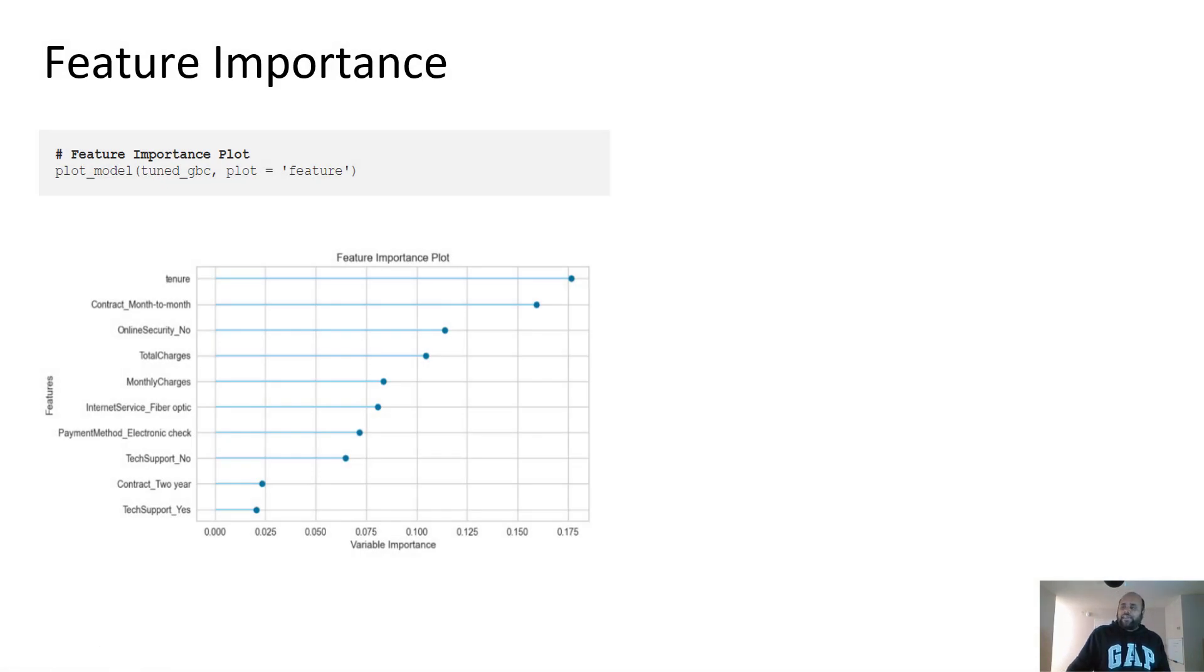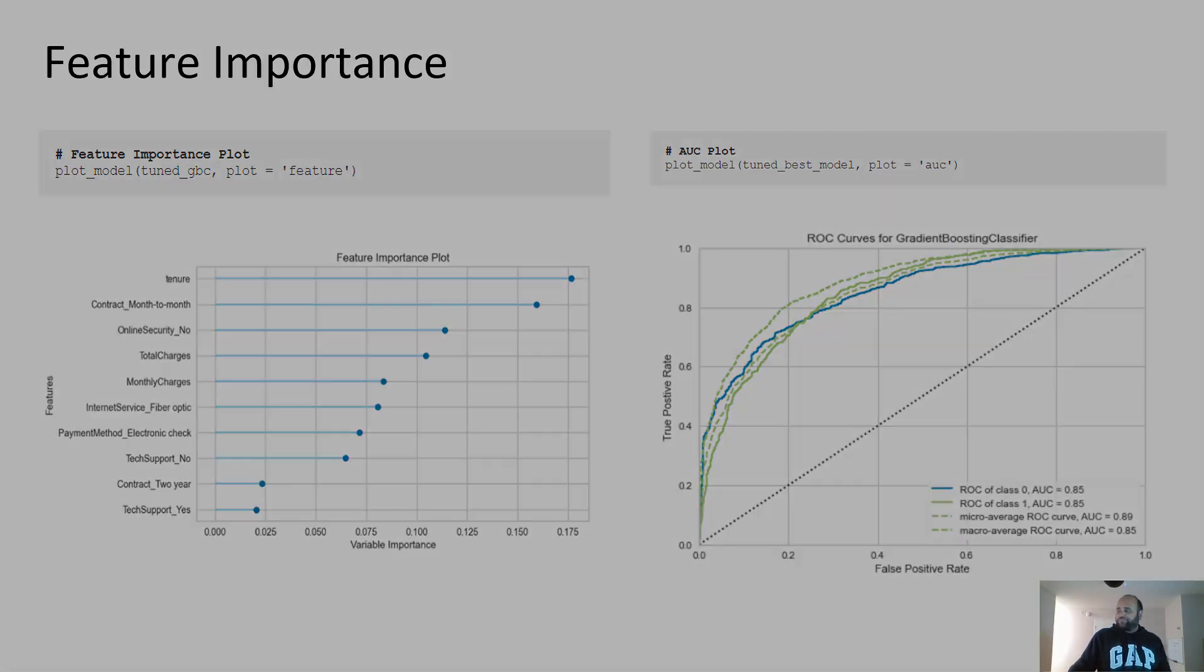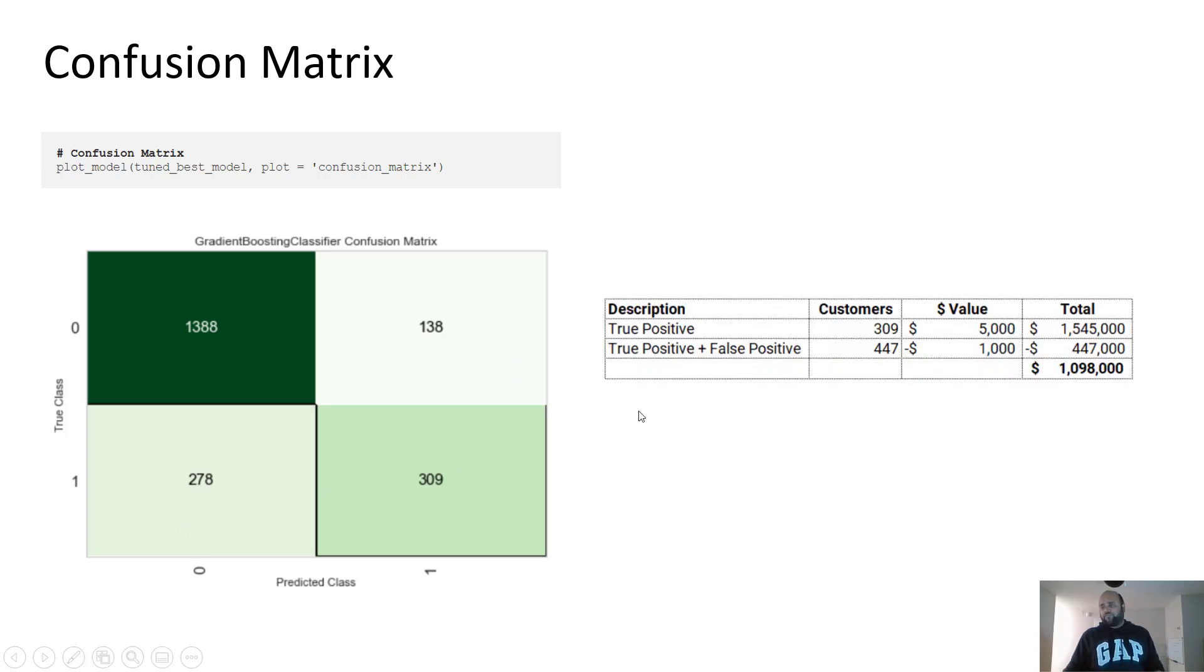If you want, you can analyze the performance of models. So with just one line of code, you can see the feature importance. Tenure is the most important feature for the algorithm to predict the churn, contract month to month, online security. This is the AUC plot. This is the number we were seeing on the other table, 85. Confusion matrix, this shows you basically four quadrants. The one here bottom right is true positive. On the top here is true negative. This 138 is false positive. And this is false negative.